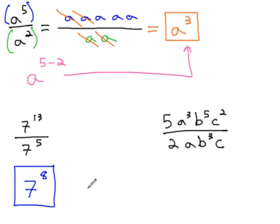On the right is a slightly more involved problem: 5 a cubed b to the 5th c squared, over 2 a b cubed c. The 5 over 2 part can't reduce at all as a fraction, so we'll keep it as 5 halves.